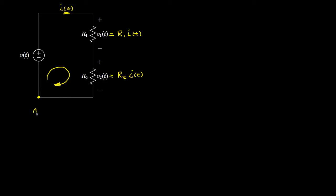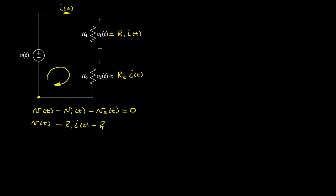Going around the loop, we go up by a voltage of V of t, then drop by V1 as we enter on the positive side, and drop by V2, which brings us back to the starting point — so that all equals zero. Substituting our expressions for V1 and V2 in terms of the current gives us V of t minus R1 times I of t minus R2 times I of t equals zero, which simplifies to V of t minus I of t times the sum R1 plus R2 equals zero.